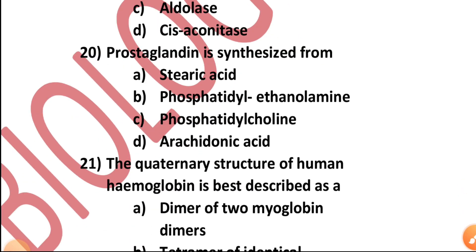Question number twenty: Prostaglandin is synthesized from — stearic acid, phosphatidyl ethanolamine, phosphatidyl choline, or arachidonic acid? It is synthesized from arachidonic acid.